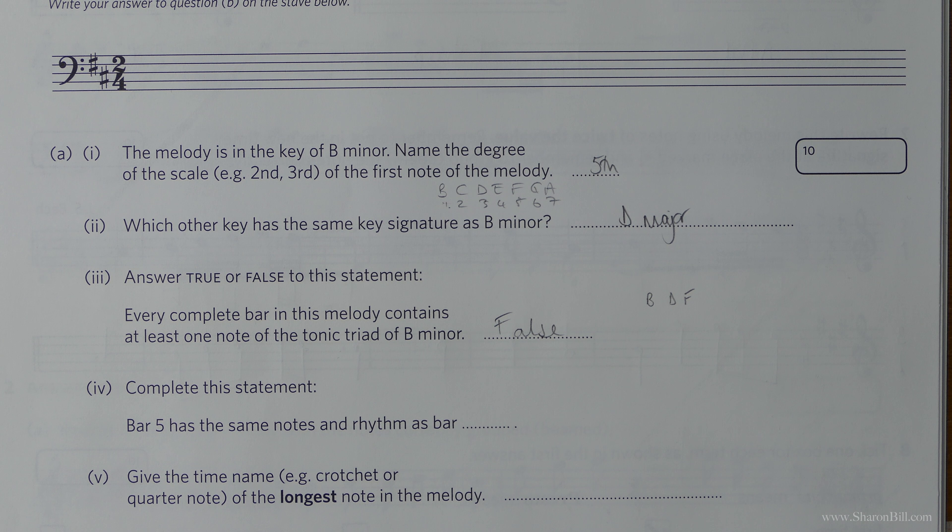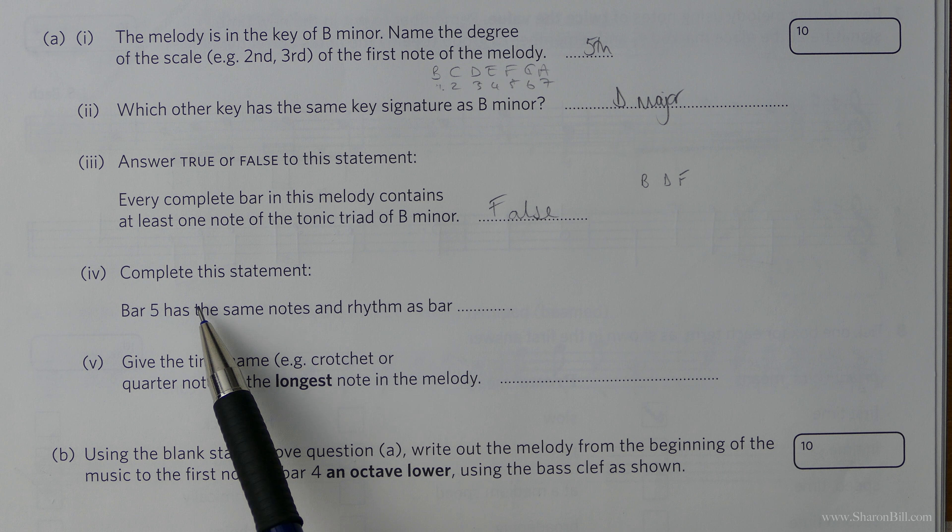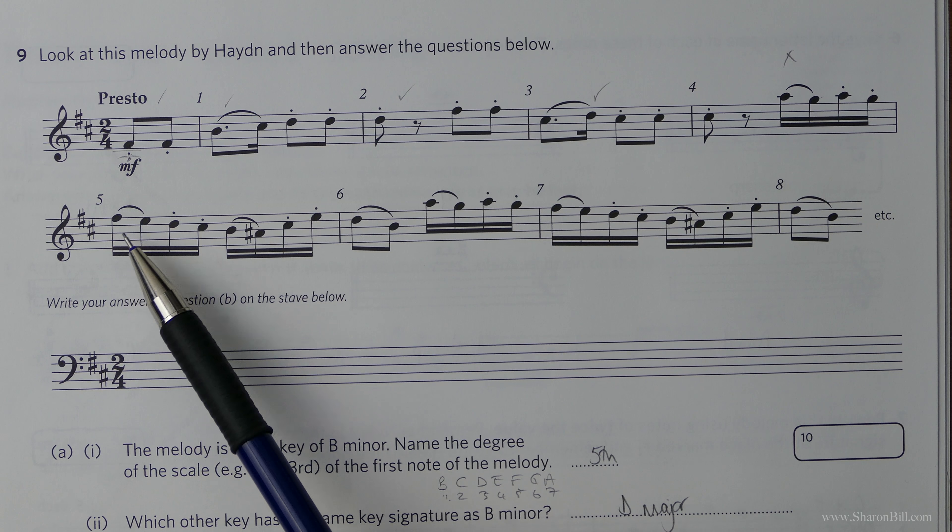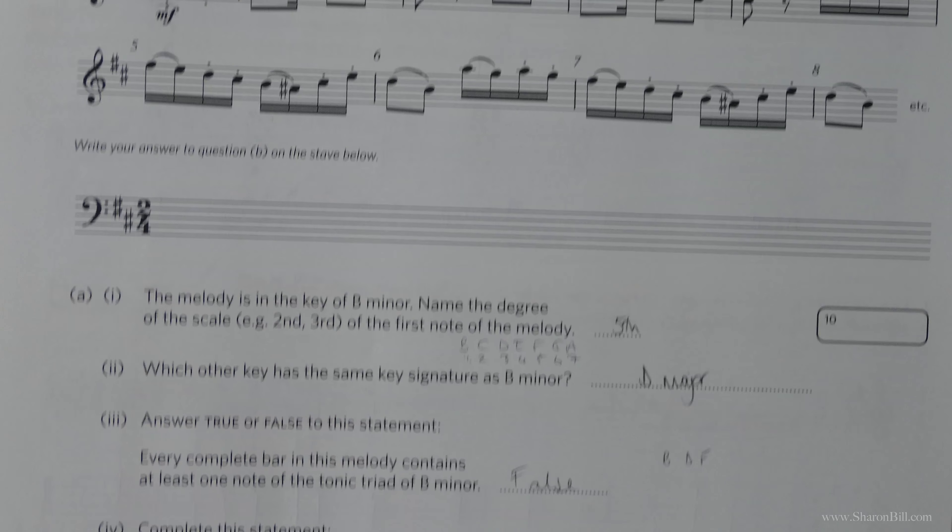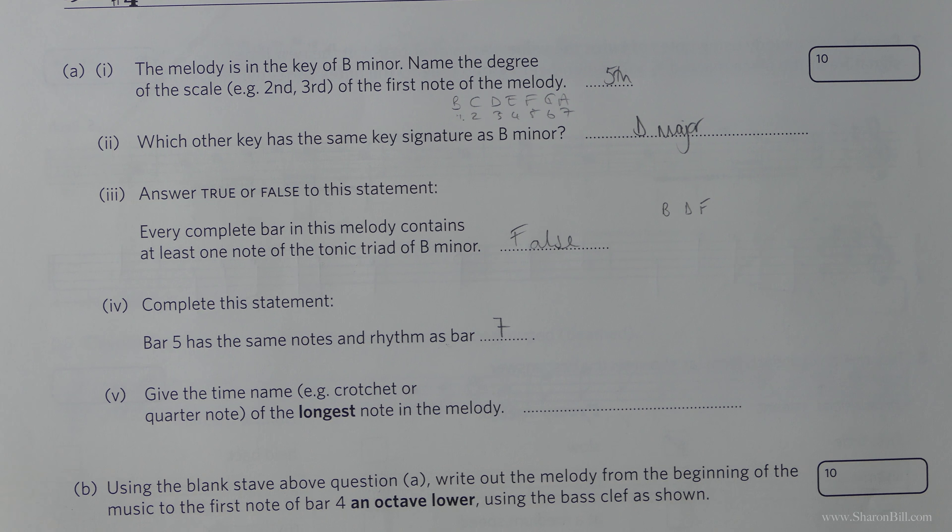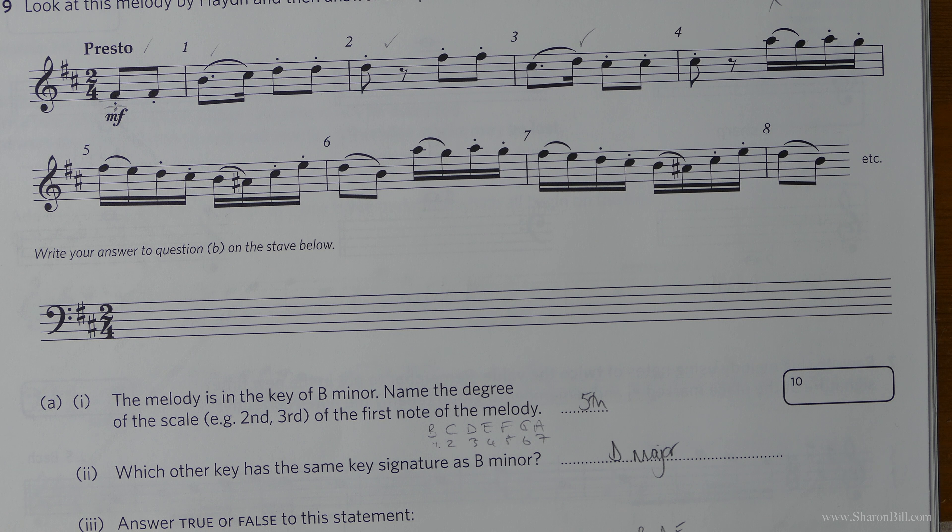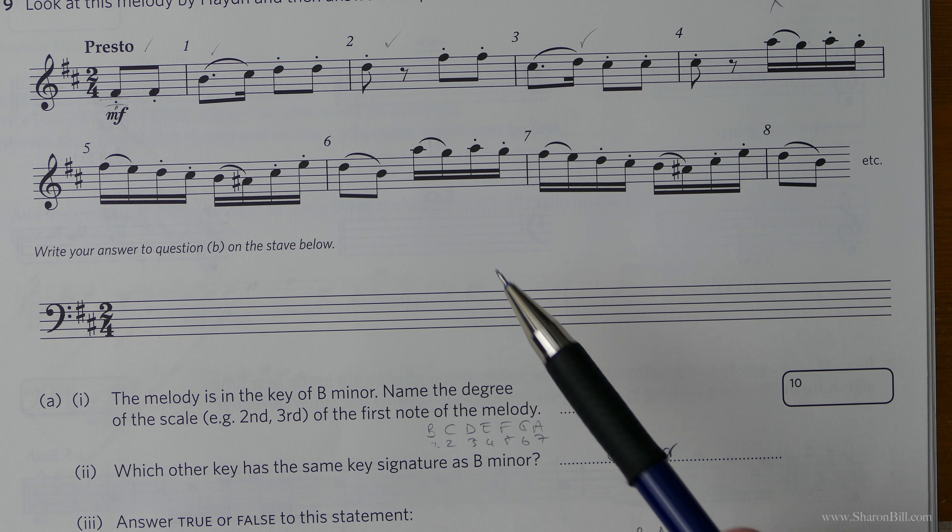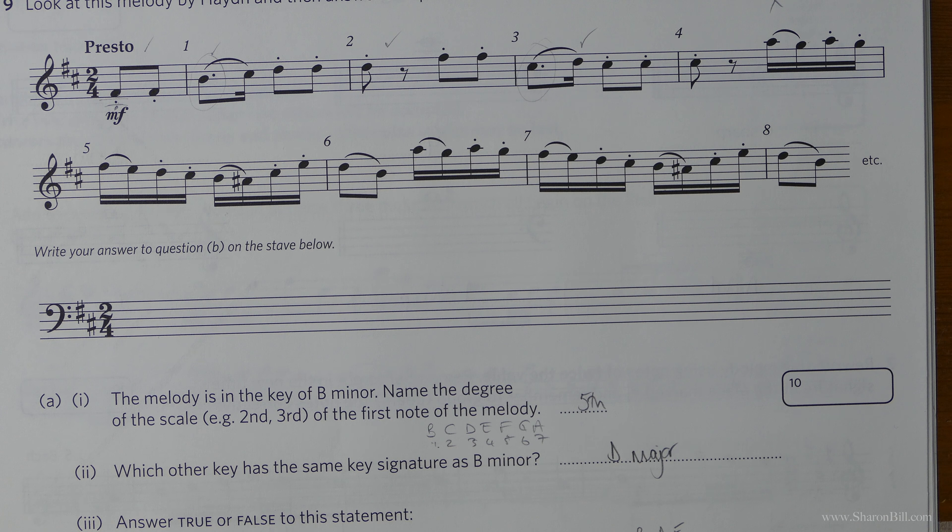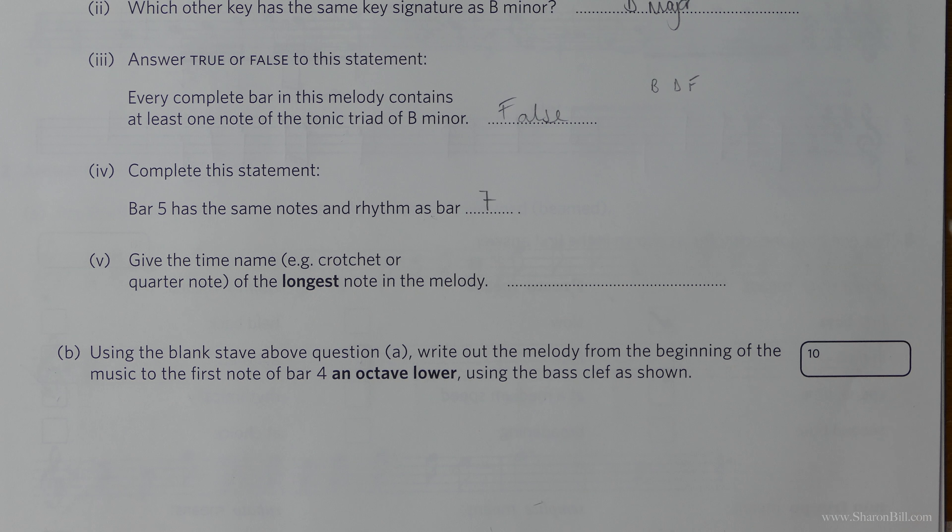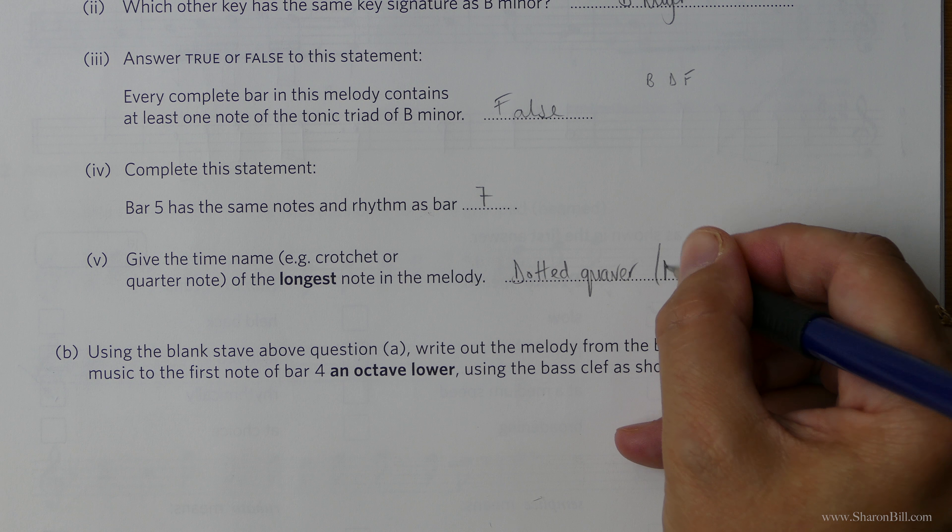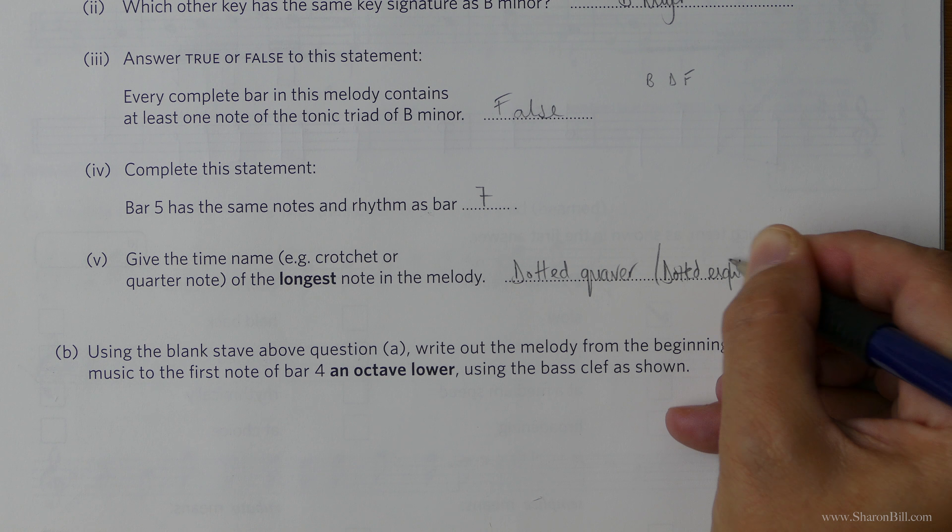Complete this statement. Bar five has the same notes and rhythm as bar something or other. So there's bar five and we can see at a glance it's the same as bar seven. Give the time name of the longest note of the melody. None of them are very long. We've got lots of quavers, lots of eighth notes, lots of semi quavers. However, the longest, remember a dot after a note makes it half as long again. So it's a dotted quaver or a dotted eighth note.